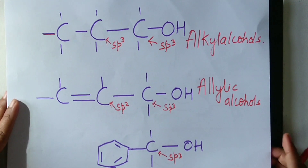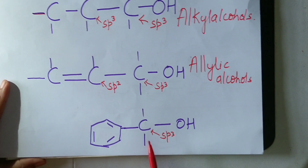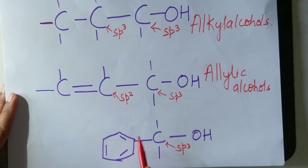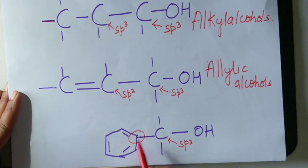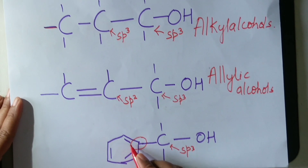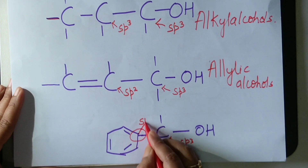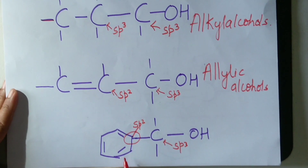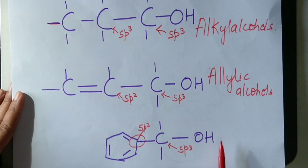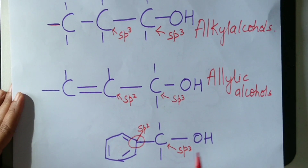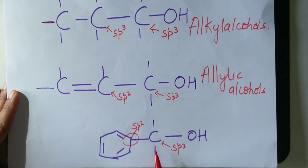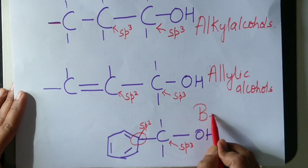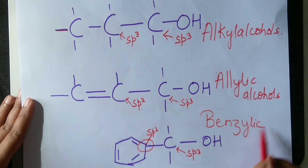Look at this example. Here, OH is next to an SP3 hybridized carbon atom which is next to a benzene ring. The hybridization of the carbon atom in the benzene ring — double bond is present, so it should be SP2. This is aliphatic and this is aromatic, so this should also be given a different name. Here, OH is attached to an SP3 carbon atom which is next to a benzene ring. Such alcohols are called benzylic alcohols.